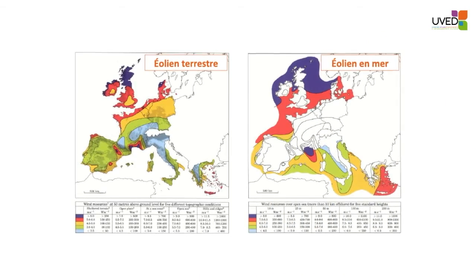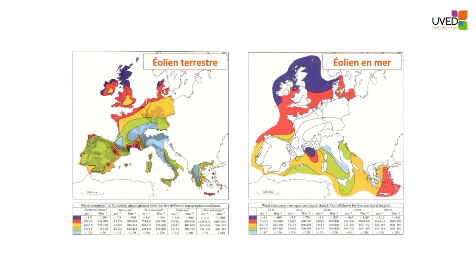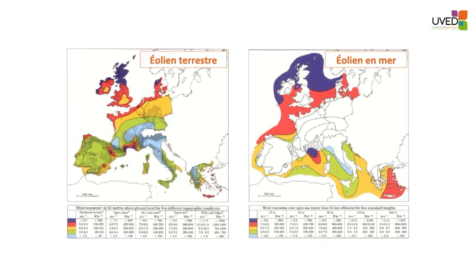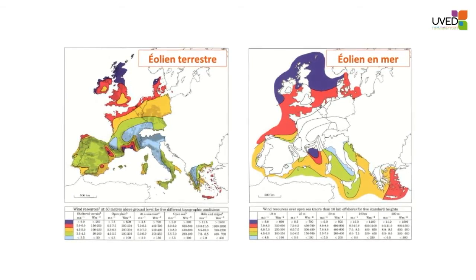Using average figures, we can determine the best locations and draw a map available on the Internet. In Europe, the windiest areas are near the Gulf of Lion in southern France and in northern Europe, shown as dark blue areas on the map. The same applies to offshore windmill locations, where the windiest areas are in the North Sea and the Gulf of Lyon near Marseille.